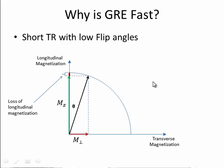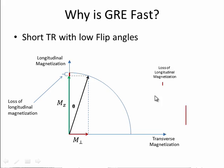We've discussed why gradient echo is fast before, but to briefly review: in gradient echo imaging, we usually apply a very short or small flip angle. That results in just a small loss of longitudinal magnetization, but a relatively large increase in transverse magnetization.